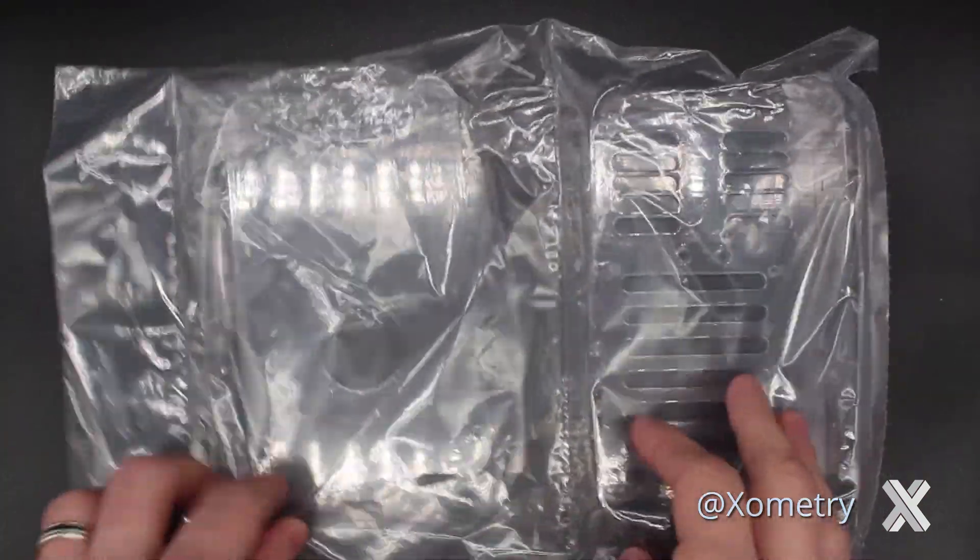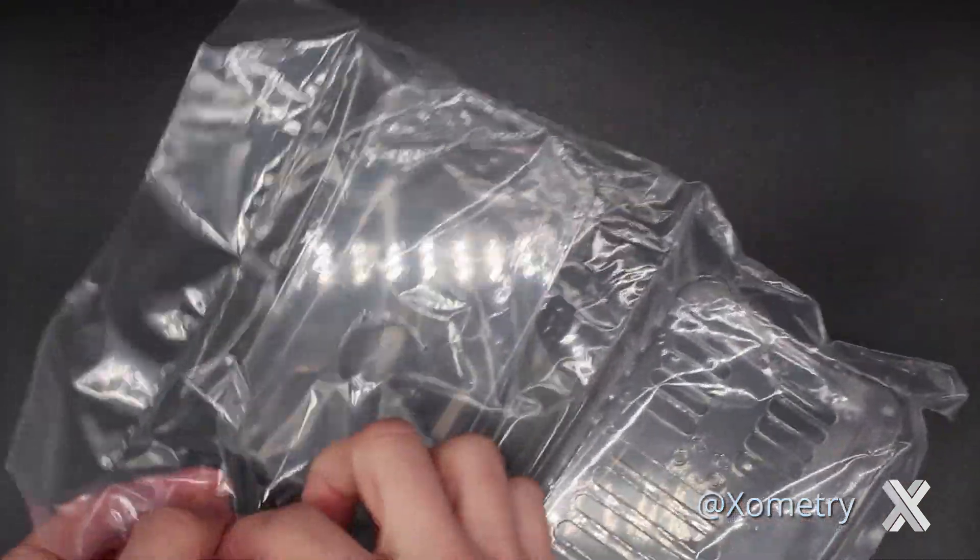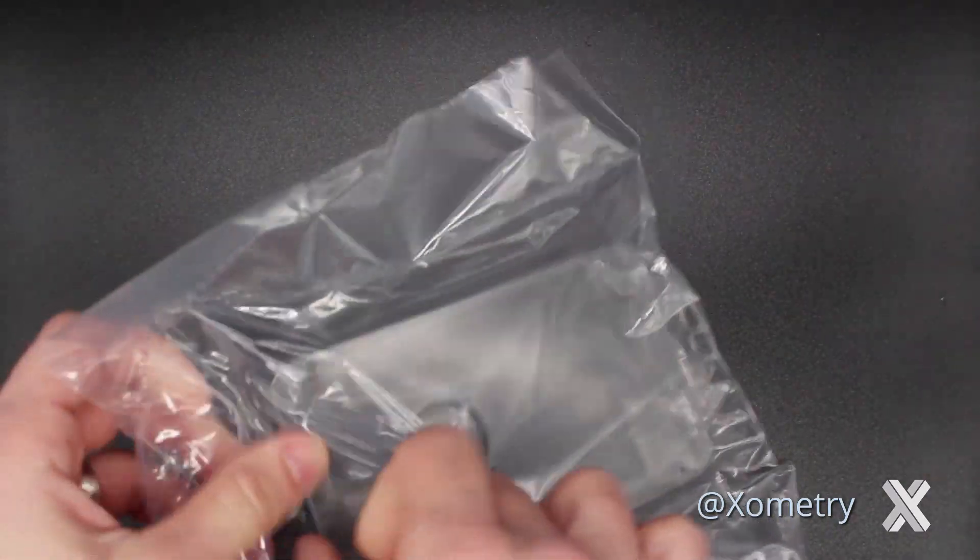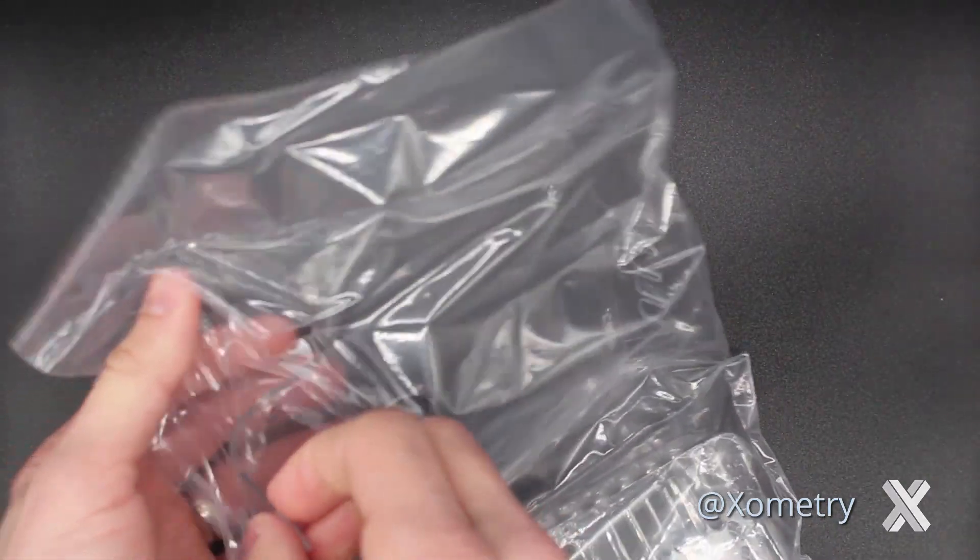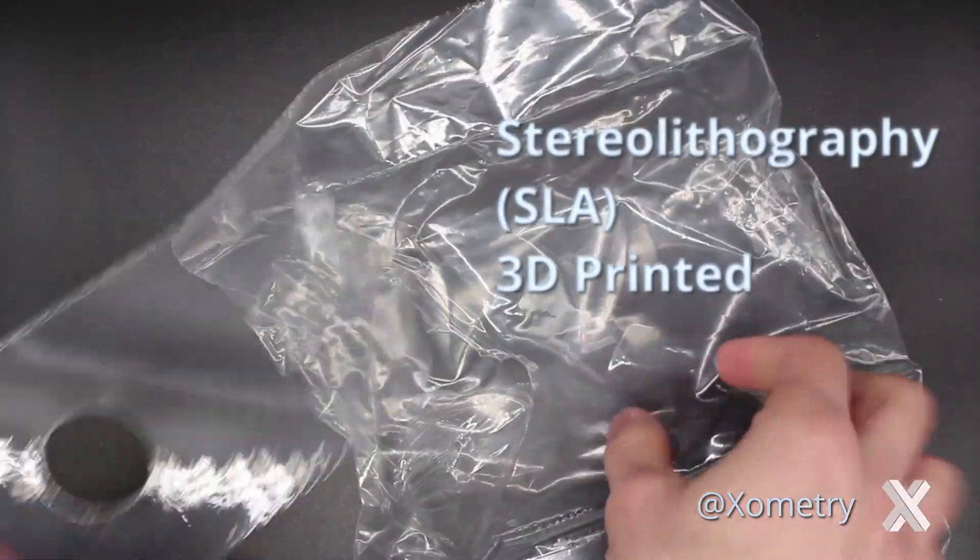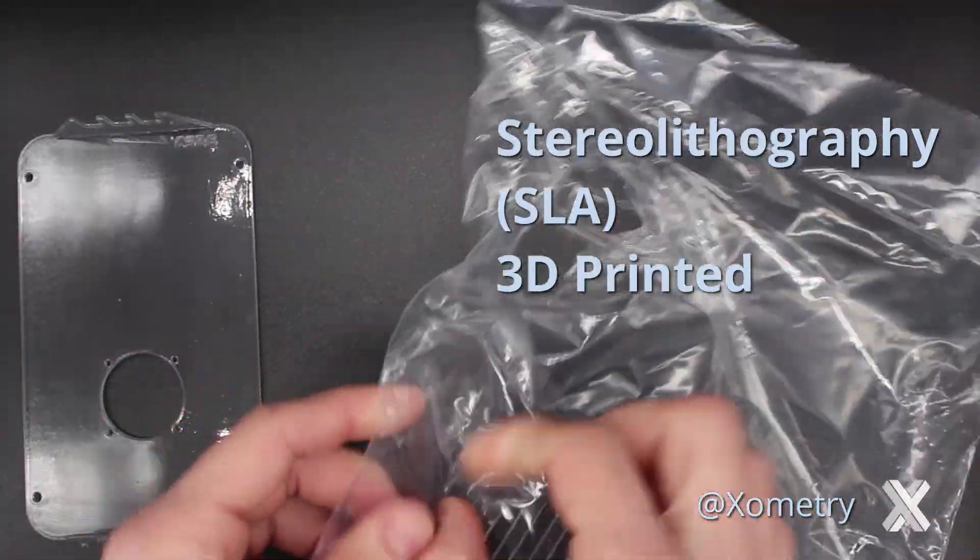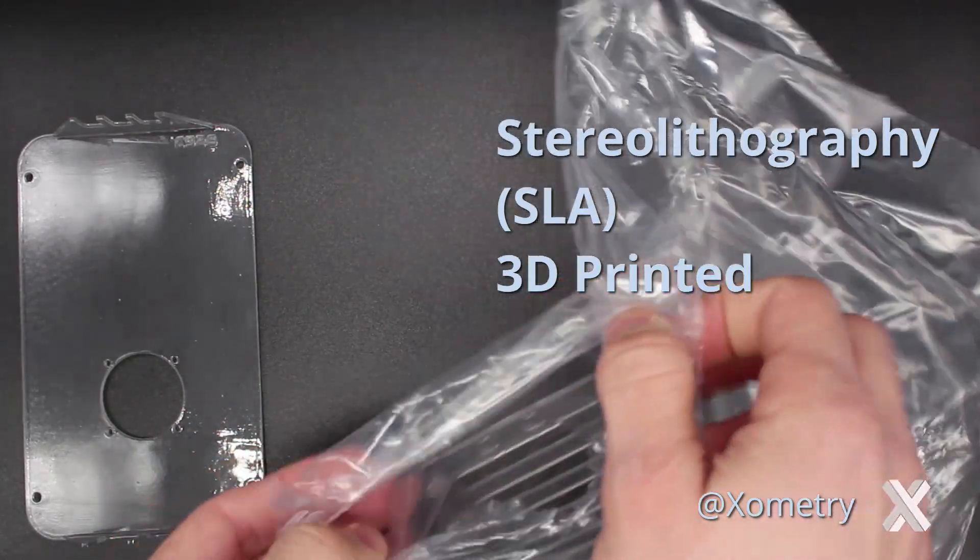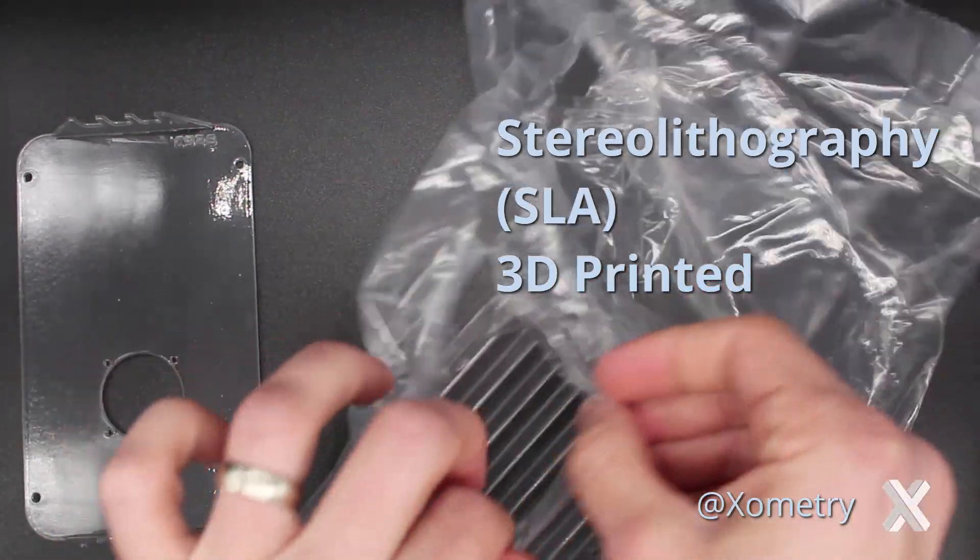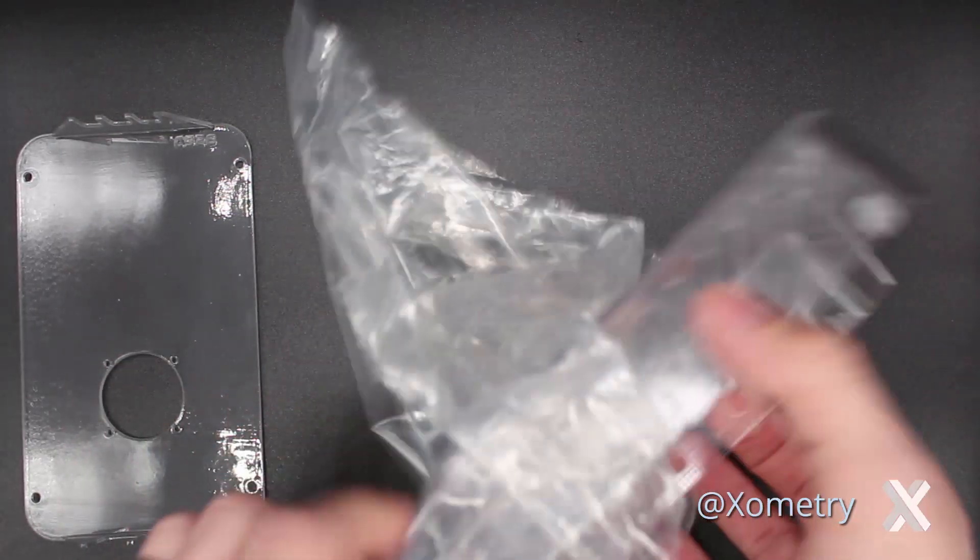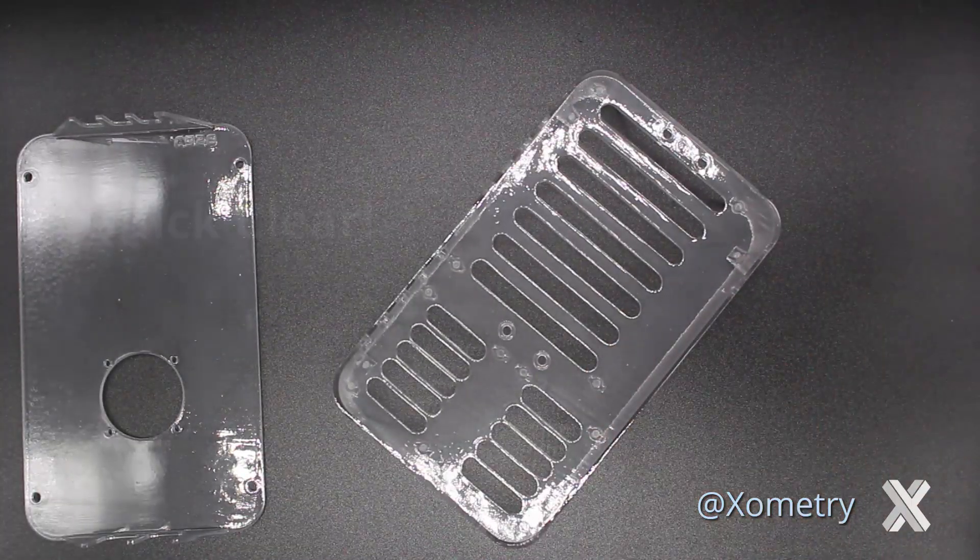Alright, so I got my parts out of the package here. They're still in their plastic. I'm going to open this up. So what I'm looking at is actually a stereolithography 3D printed part. But what's unique about it is you can see it has a lot more transparency to it, much more than a standard natural print. And that's because this finish is quick clear.